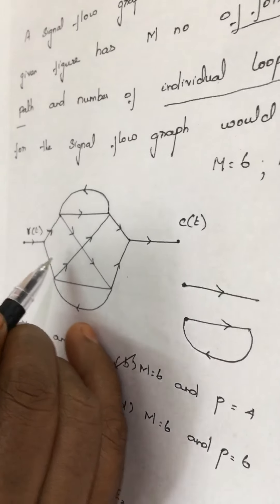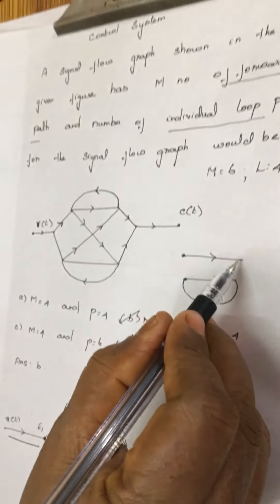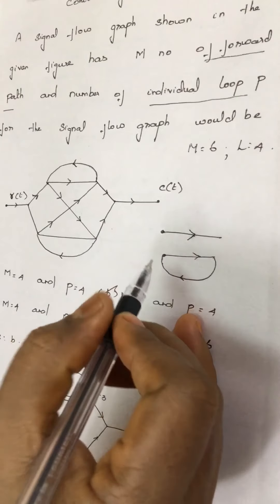The forward path starts at one node and ends at another node with a representation of an arrow.